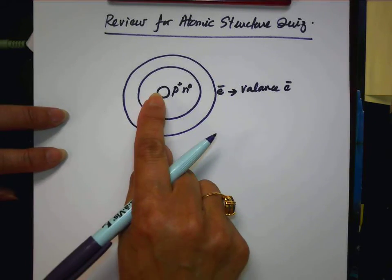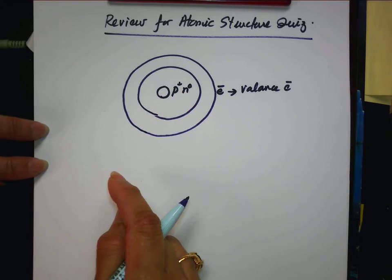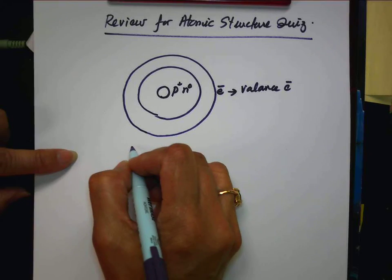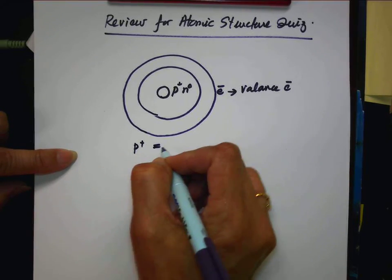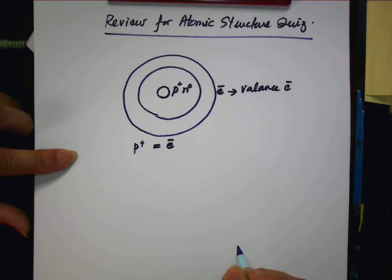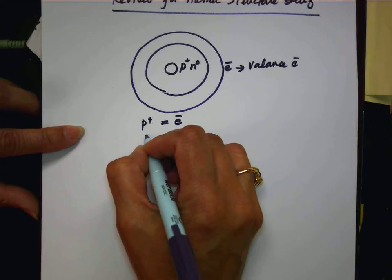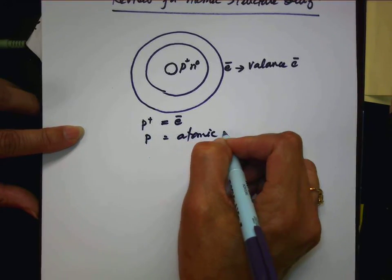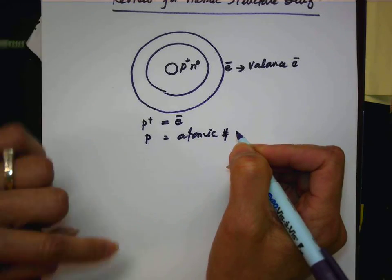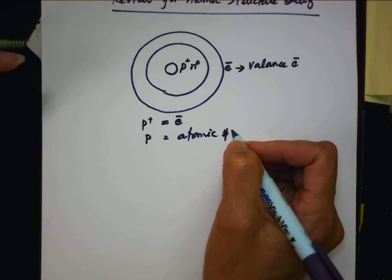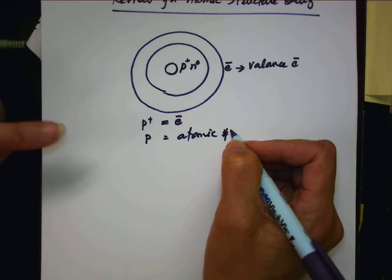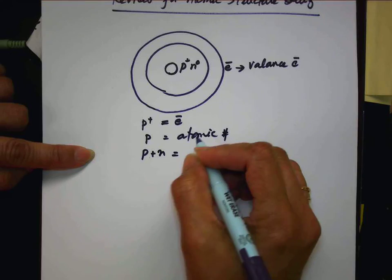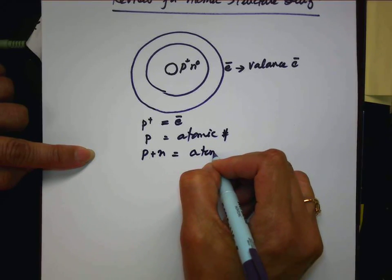So you have protons, neutrons, and electrons. So let's see, you know it, proton number has to be same as electron number. Protons are called atomic number. Those are all the basic structure of atoms. And neutrons and protons are called atomic mass.